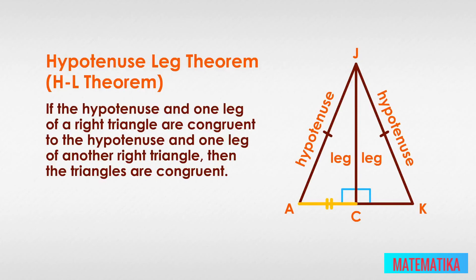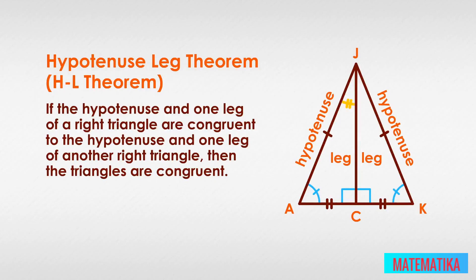Now verify that AC is congruent to CK and all the interior angles are congruent. AC is congruent to CK because the altitude from the vertex of an isosceles triangle bisects the base, since it is by definition the perpendicular bisector. Angle JCA is congruent to angle JCK because they are both right angles. Angle A is congruent to angle K because they are angles opposite the equal legs, in accordance with the isosceles triangle theorem. Angle AJC is congruent to angle KJC because side JC is the angle bisector of the original angle AJK.